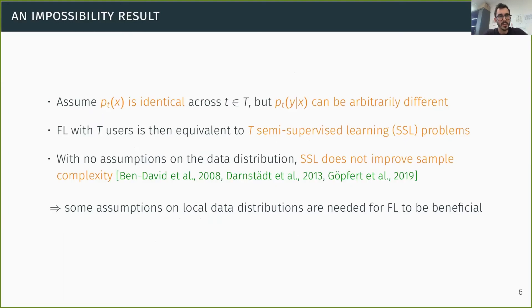To justify why we need to make assumptions on local data distributions, we're going to start with stating an impossibility result, a little bit informally here. So for simplicity, let's assume that the marginal distribution of the features PT of X is essentially identical across users, but that the distribution of labels given the features can be arbitrarily different. Then we can see that federated learning with T users becomes equivalent to solving T semi-supervised learning problems, one for each user, because a user T can only use the data of other users in their unlabeled form, because labels in the worst case can be completely uninformative about the task of this particular user. And in fact, we know that with no assumptions on the data distribution, semi-supervised learning does not improve sample complexity compared to supervised learning. So the consequence of that is that some assumptions are needed about the local data distributions for essentially federated learning to be beneficial.